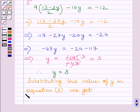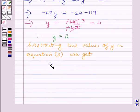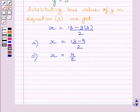Substituting this value of y in equation 3 we get x is equal to 13 minus 3 multiplied by 3 upon 2. This implies x is equal to 13 minus 9 upon 2 which implies x is equal to 4 upon 2 or x is equal to 2.